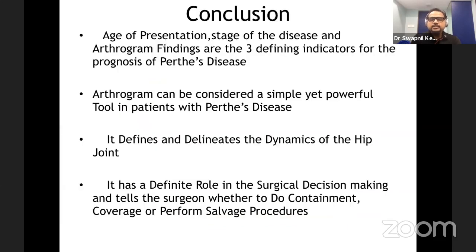To summarize: age of presentation, stage of disease, and arthrographic findings are the defining characters that help prognosticate Perthes disease. Arthrogram is a very simple yet powerful tool — it defines and delineates the dynamics of the hip joint. These criteria, including arthrogram, have a definite role in surgical management because they tell the surgeon whether the hip is containable, whether it needs coverage, or whether salvage procedures are required.